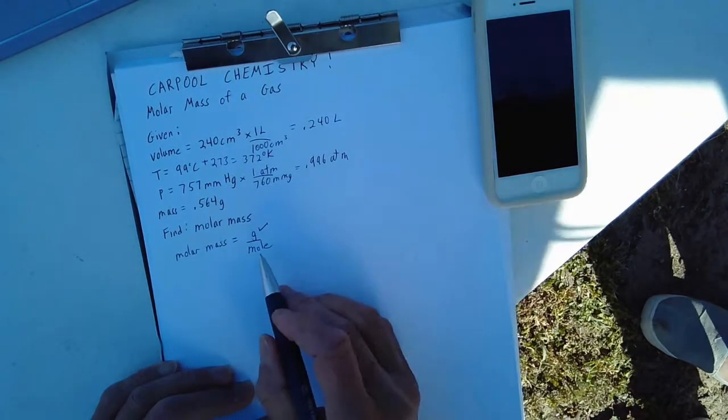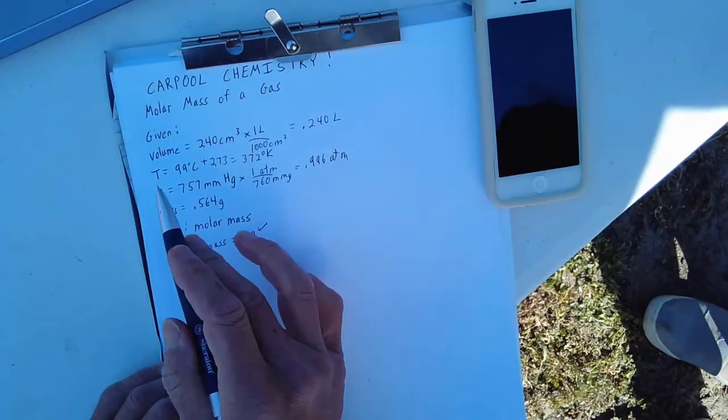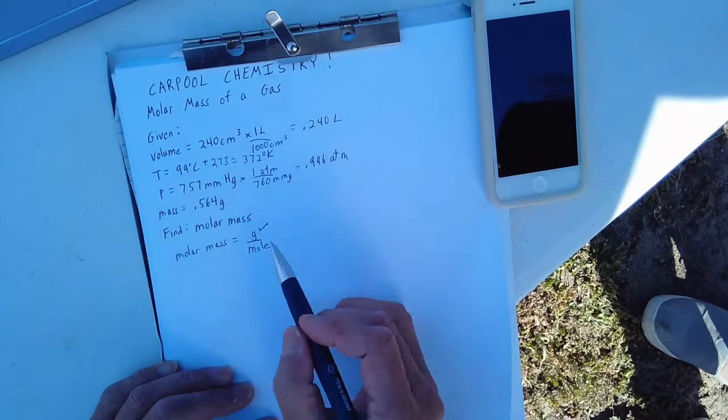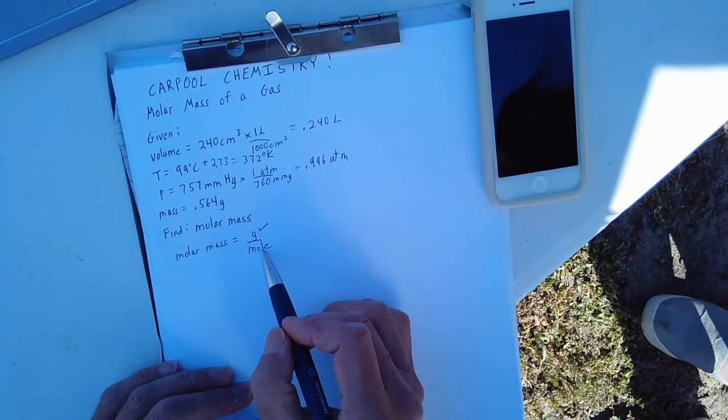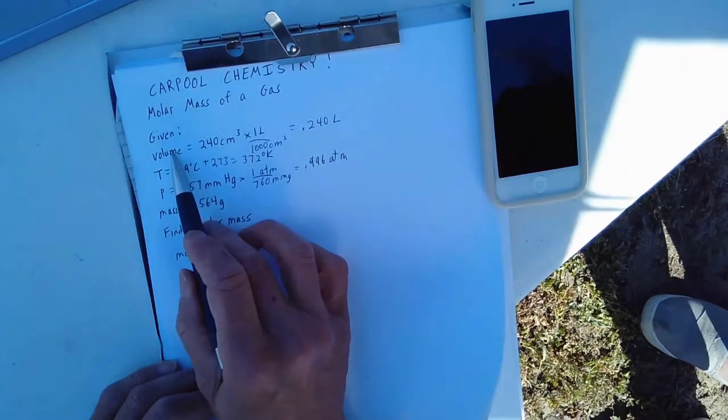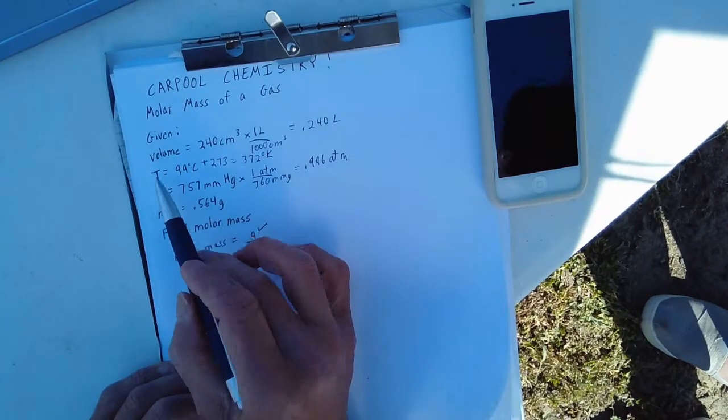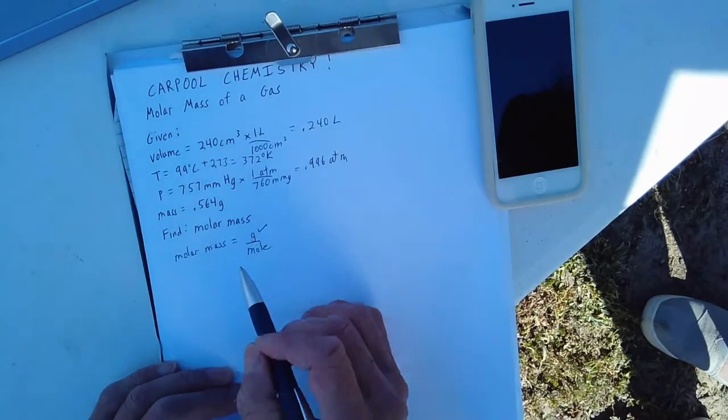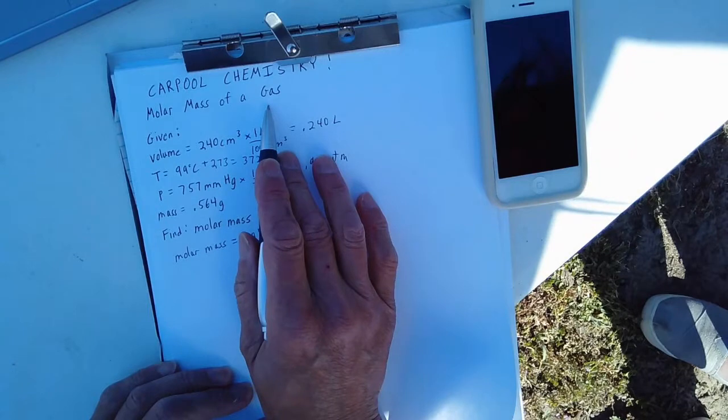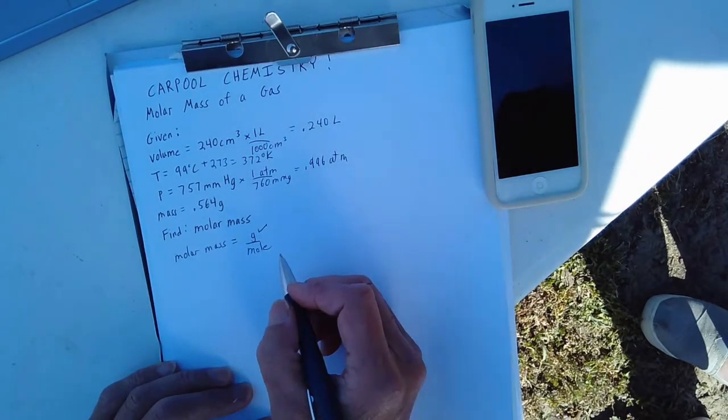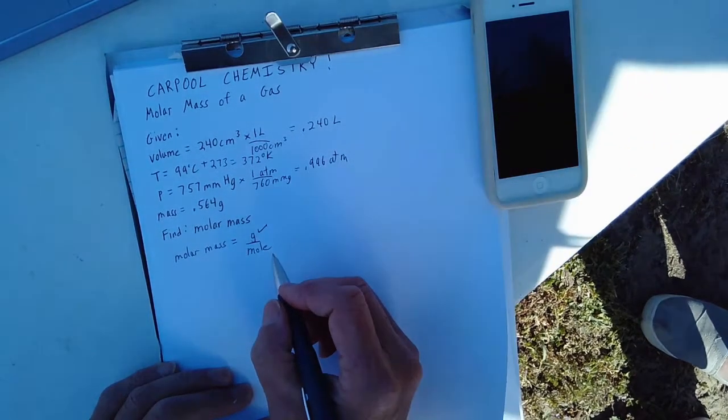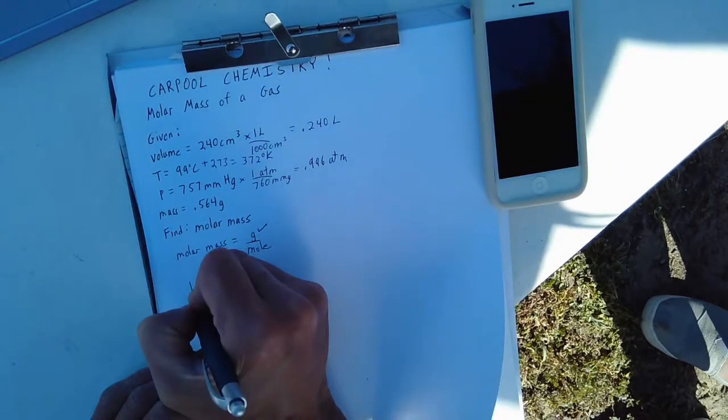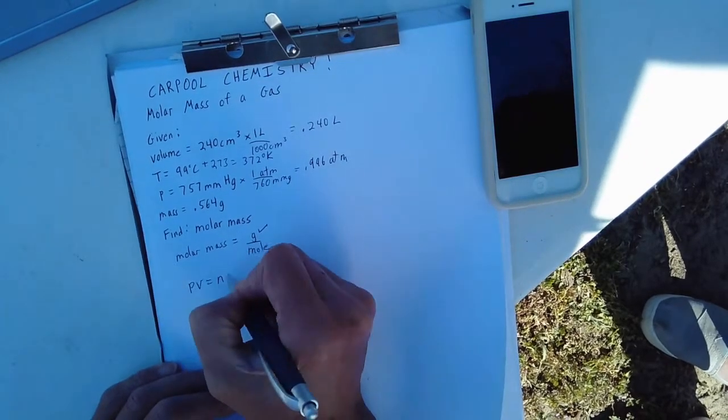Do we know the number of moles? We're not given the number of moles, so we can't just put it inside the denominator here. But we do know the volume. We do know the temperature. We do know the pressure. And we know that we're talking about a gas. And so what equation comes to mind that relates all those together? Of course, PV is equal to nRT.